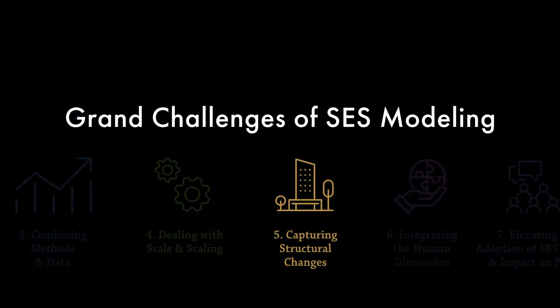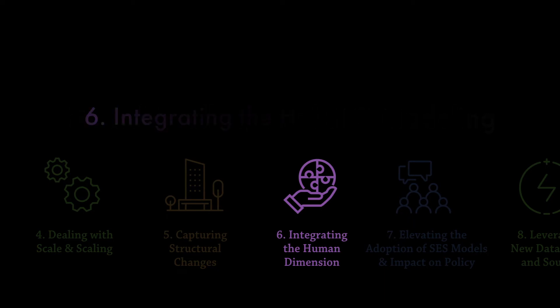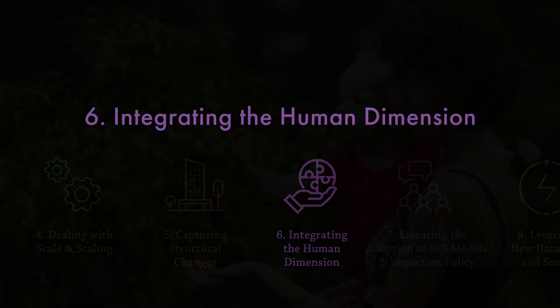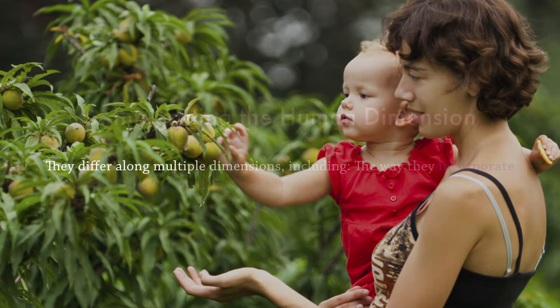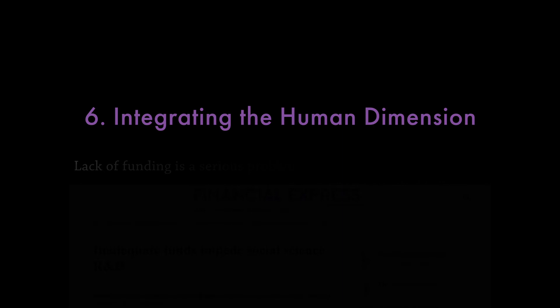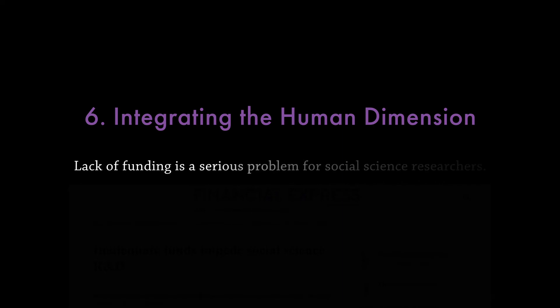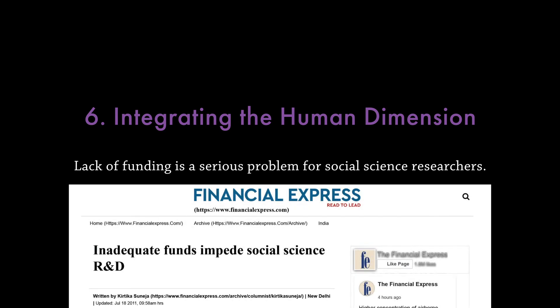The next Grand Challenge deals with how to integrate the human dimension into SES models. As discussed in our Grand Challenges paper, there are mainly six approaches for doing this. They differ along multiple dimensions, including the way they incorporate feedback, the heterogeneity of social decisions, and data intensity. One reason this integration has been challenging is, once again, lack of funding — which is a serious problem for social science researchers. This means insufficient data and insufficient resources for supporting collaborations with environmental scientists.